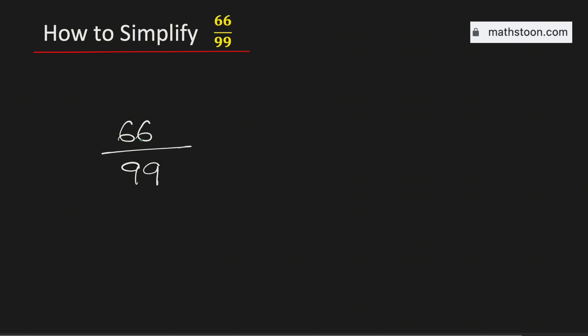See that both the numbers are divisible by 11. If we divide 66 by 11 we get 6, and if we divide 99 by 11 we get 9. So it is equivalent to 6 over 9.